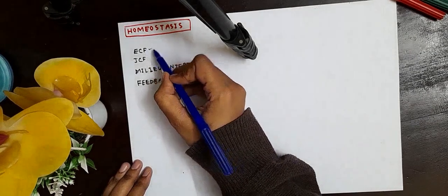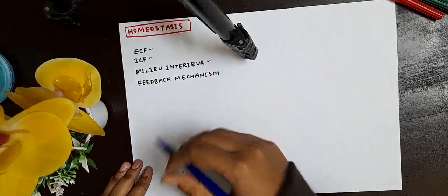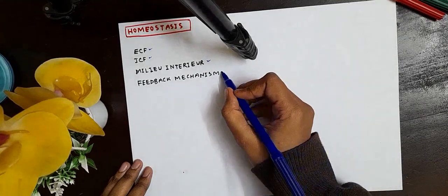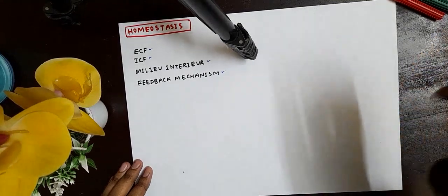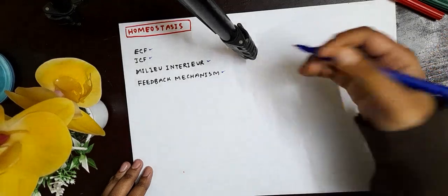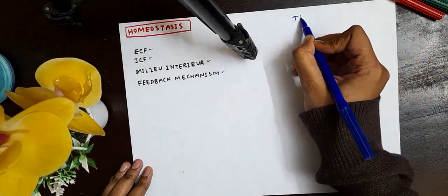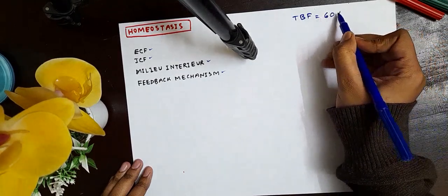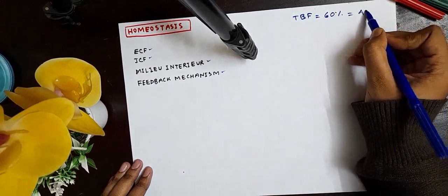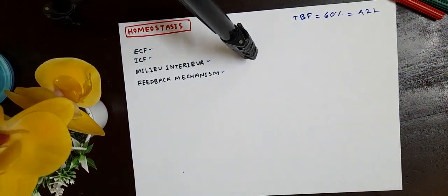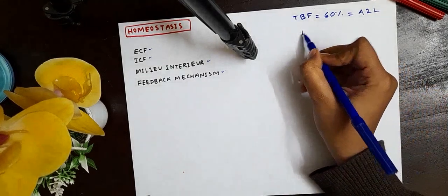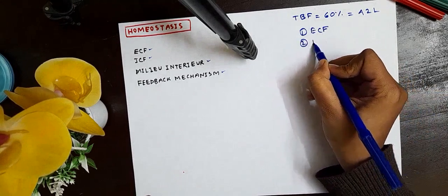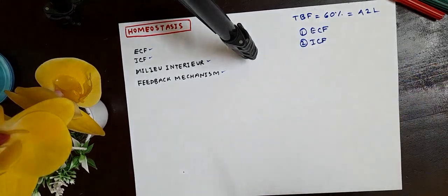ECF, ICF, and the interior of homeostasis control and feedback mechanisms — our body has these feedback mechanisms. One adult male person has total body fluid that is 60% of whole body weight, approximately 42 liters. The total body fluid has two compartments: ECF (extracellular fluid) and ICF (intracellular fluid).